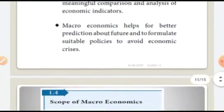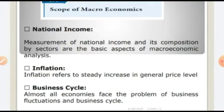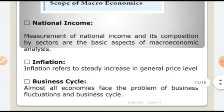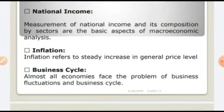The next topic is the scope of macroeconomics. First: national income — measurement of national income and its composition by sector is a basic aspect of macroeconomics. It is a long-term understanding of the growth process of an economy. Second: inflation — it refers to the study of increase in general price level. It involves constructing various index numbers such as wholesale price index and consumer price index, which are needed in macroeconomics.